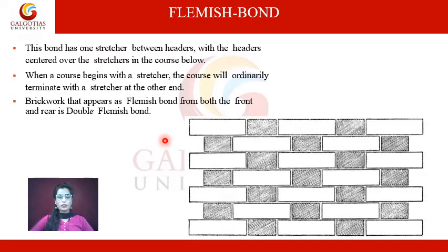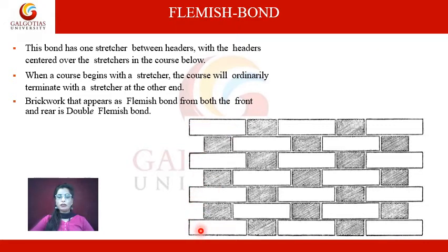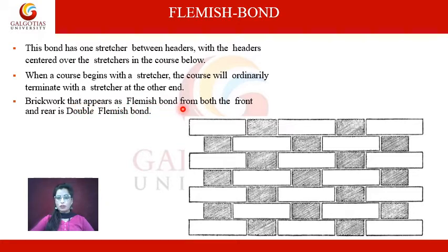Flemish bond has one stretcher between headers, with the header centered over the stretcher in the course below. The first, third, and fifth courses follow the same repetition: stretcher, header, stretcher, header. When a course begins with a stretcher, it will ordinarily terminate with a stretcher at the end. Brickwork that appears as Flemish bond from both the front and the rear is called double Flemish bond.